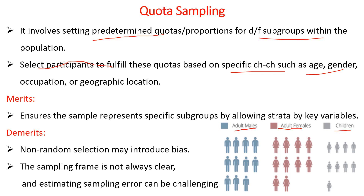The merit of quota sampling is that it ensures the sample represents specific groups by stratifying by key variables, allowing representation of those groups — though this representation is not based on random sampling. The demerits are that non-random selection may introduce bias, the sampling frame is not always clear, and estimating sampling error can be very challenging. This is all about today's discussion.